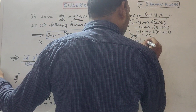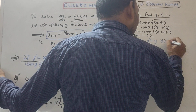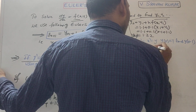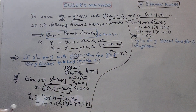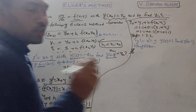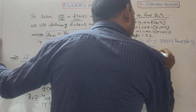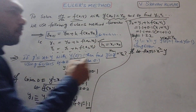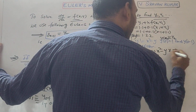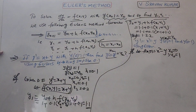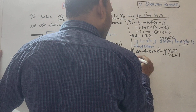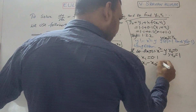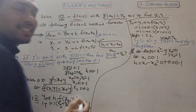Second problem: y' = x² - y with initial condition y(0) = 1. Find y(0.1) using Euler's method. Here f(x, y) = x² - y. Comparing with y(x₀) = y₀, we get x₀ = 0 and y₀ = 1. We need to find y(0.1), so x₁ = 0.1. The step size h = x₁ - x₀ = 0.1 - 0 = 0.1.